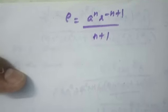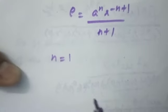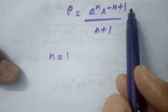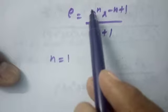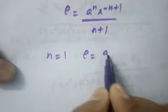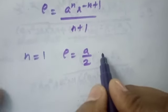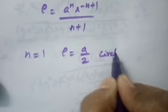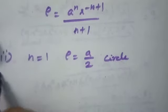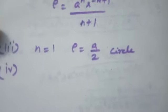If n = 1: the exponent becomes −1+1 = 0, so ρ = a/2. This represents a circle. These are all particular cases we need to know; they may be asked in short-answer questions.